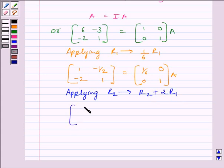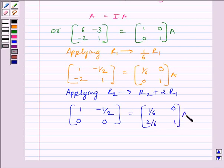So, we get matrix 1, minus 1 upon 2, 0, 0 equals matrix 1 upon 6, 0, 2 upon 6, 1 multiplied by A.